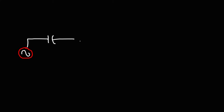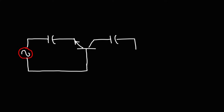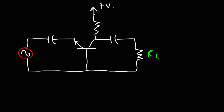Now let's move on to the common base amplifier. Like before, we're going to have our input signal and a capacitor. But this time, the input signal is applied to the emitter of the transistor. We'll have a load resistor RL, and then a resistor going towards VCC, the collector supply voltage.